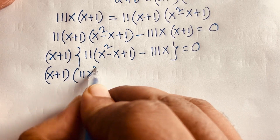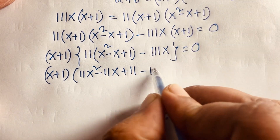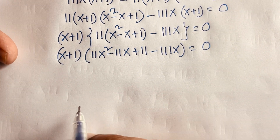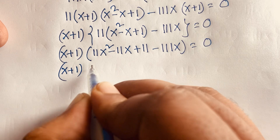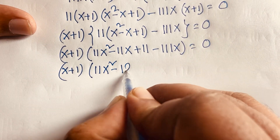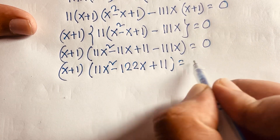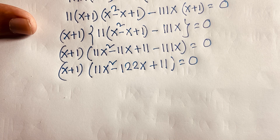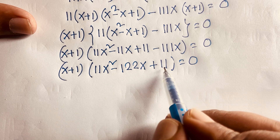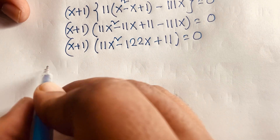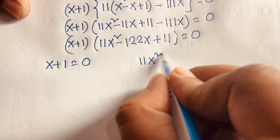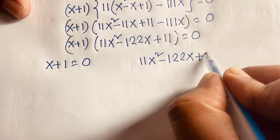Factoring out (x + 1), we get (x + 1) times [11(x squared minus x + 1) minus 111x] equals 0. Expanding: 11x squared minus 11x plus 11 minus 111x, so it becomes (x + 1) times (11x squared minus 122x plus 11) equals 0.